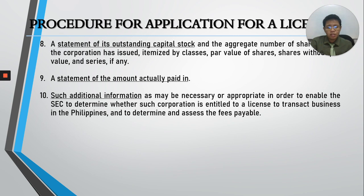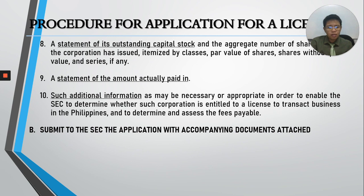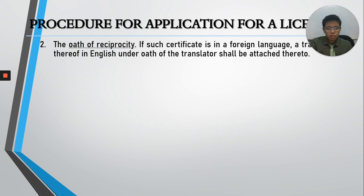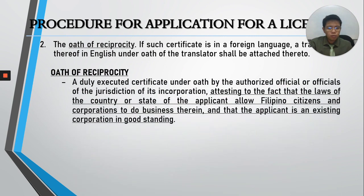The foreign corporation must submit to the SEC the application with accompanying documents under Section 142. These include: a copy of the articles and bylaws — if in a foreign language, with official translation; and an oath of reciprocity, which is a certificate under oath issued by an authorized official of the jurisdiction of incorporation, attesting that the laws of that country allow Filipino citizens and corporations to do business therein and that the applicant is an existing corporation in good standing.